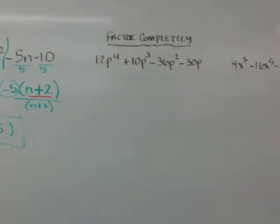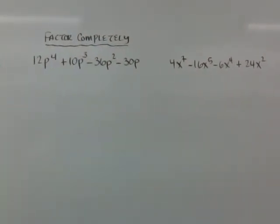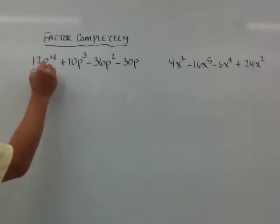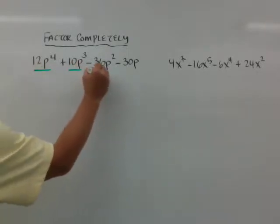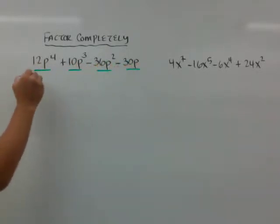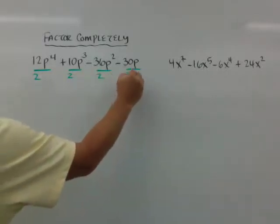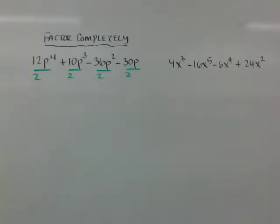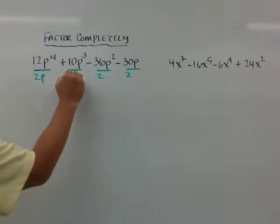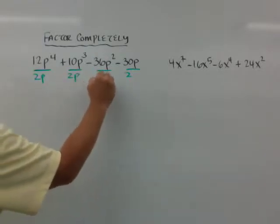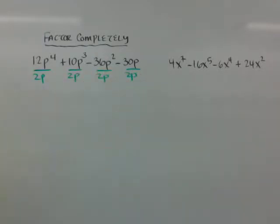Whereas over here in these examples, I can pull something out. So what I want to do is pull something out first. And if I pull something out, I can see I can pull a 2 out of each of these, since they're all even numbers, and I can actually pull 1p out of each one. And if I pull a 2p out over here, I'm going to use brackets for this.